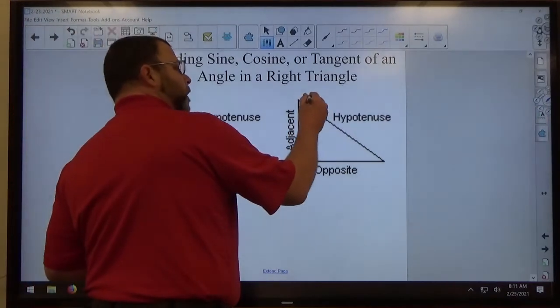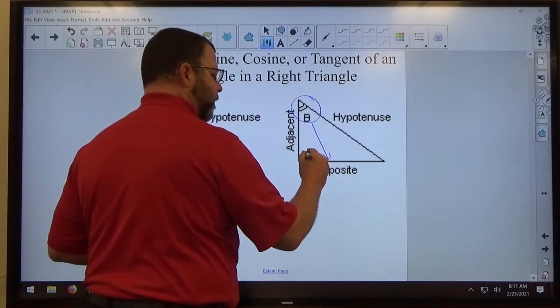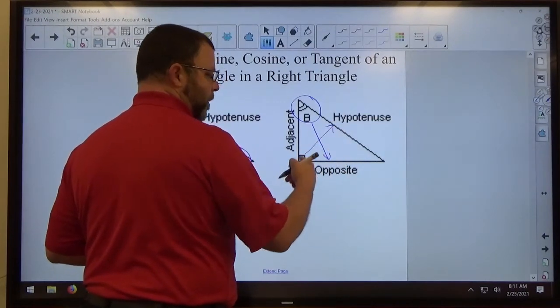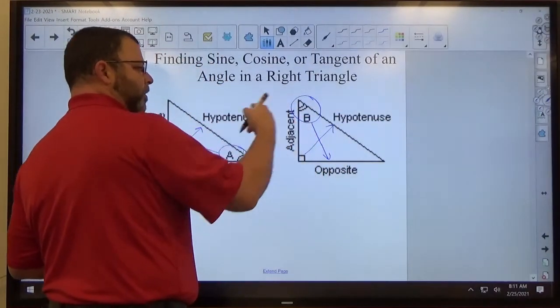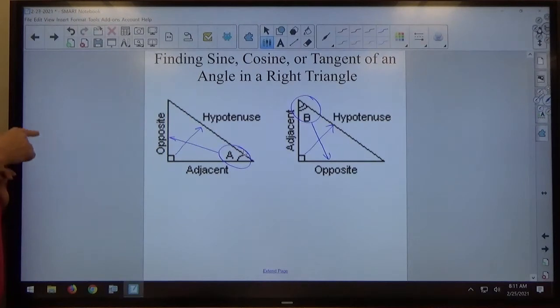If we're dealing with acute angle B, we go across the triangle, that's opposite B, that's the hypotenuse because it's opposite the right angle, this is the adjacent side to B. So basically the opposite and the adjacent swap places if you swap acute angles. Hypotenuse is what it is for the right triangle.